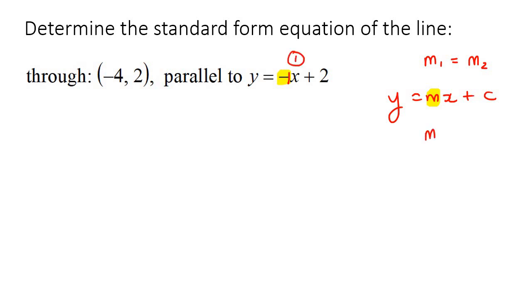So the slope of this first line is negative 1. So the slope of the parallel line that we are trying to find would also be negative 1, because we said that the two slopes are equal.